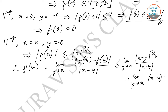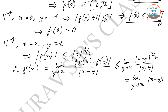This limit equals |x − y|^(1/2), which equals 0 as y → x. So f'(x) = 0, which means f(x) = c, where c is a constant.